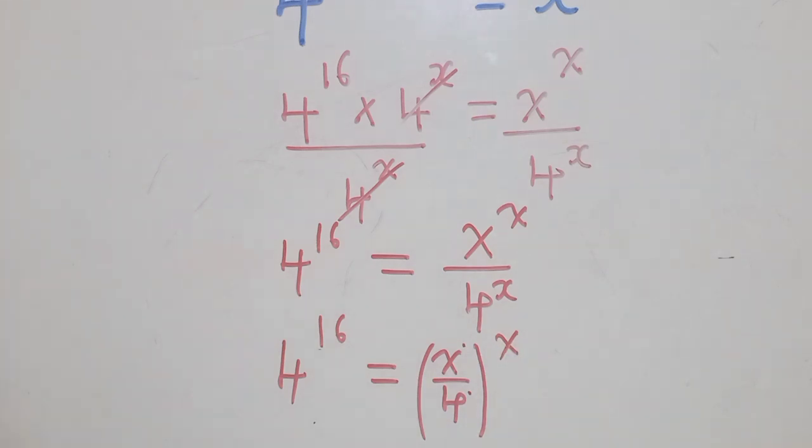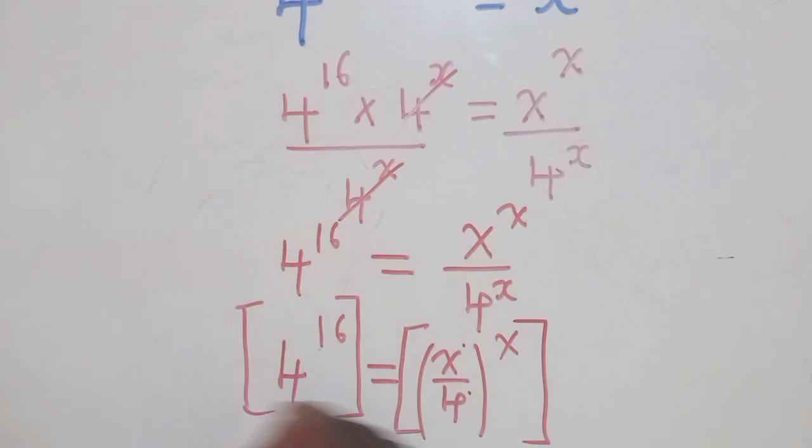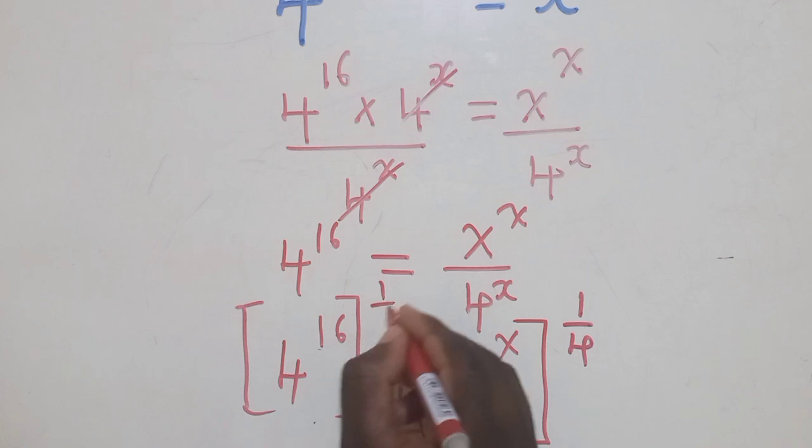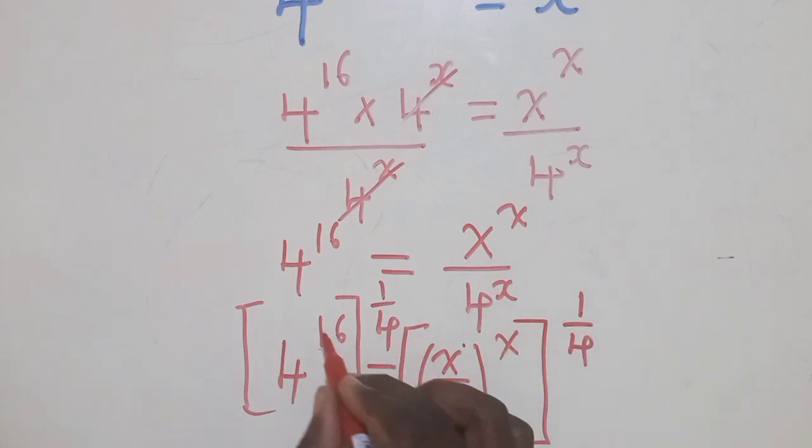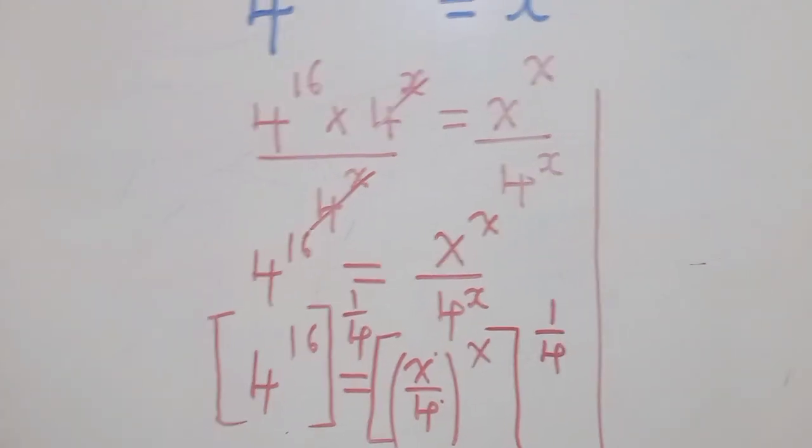That's the property we need to use. Thereafter we are going to balance - the base and the power must be equal to each other. We are going to introduce something here, look very careful. We are going to introduce 1/4 here and also here, such that following the laws of indices, power to power we multiply.